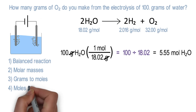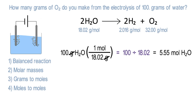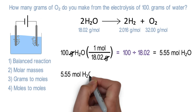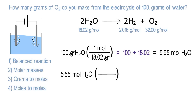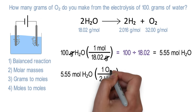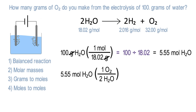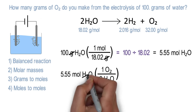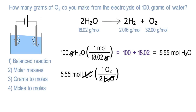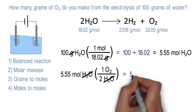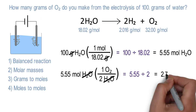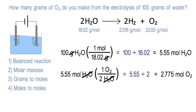Step 4: Convert the moles of water to moles of whatever you are solving for. Write down 5.55 moles of water and multiply this by a fraction. This time, the balanced equation is our conversion factor. The coefficients in the balanced equation tell us the ratio of the chemicals in the reaction. Because we started with moles of H2O, write 2 H2O on the bottom. Because we want to convert to oxygen, write 1 O2 on the top. In your calculator, type 5.55 divided by 2, which works out to be 2.775 moles of oxygen.